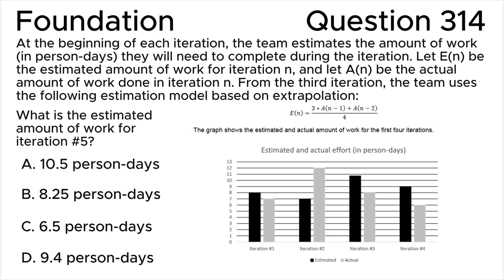From the third iteration, the team uses the following estimation model based on extrapolation: E(n) = (3 × A(n-1) + A(n-2)) / 4. The graph shows the estimated and actual amount of work for the first four iterations. What is the estimated amount of work for iteration number 5?